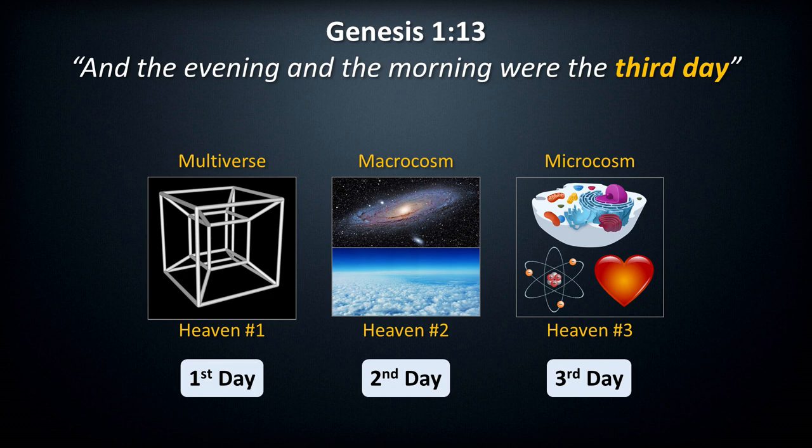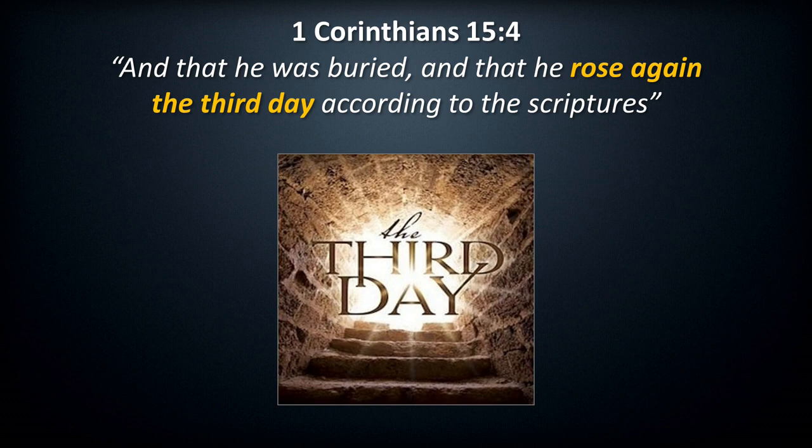Genesis 1:11: 'And God said, Let the earth bring forth grass, the herb yielding seed, and the fruit tree yielding fruit after his kind, whose seed is in itself upon the earth, and it was so.' There it is — the third heaven is the kingdom of God within. It is often compared to seed as well as people in general, like kings or the ten virgins. When Jesus said 'I am the way, the truth, and the life,' he was referring to this third heaven. The evening and the morning were the third day — Genesis 1:13. With the completion of the third day comes the completion of the three heavens. Heaven number one is created on day one, heaven number two on day two, and heaven number three on day three — simple and beautiful.